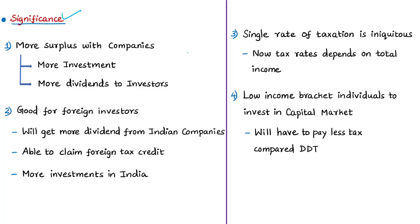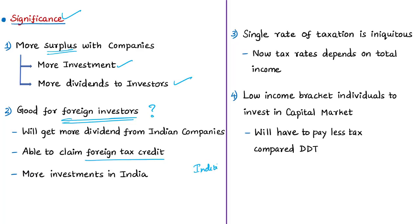Since companies are now freed from paying DDT, they will have more surplus to reinvest in the business, and shareholders may receive more dividends. This move is also beneficial for foreign companies investing in Indian companies. Previously, when an Indian company paid huge DDT, the dividend received by the foreign company was reduced. The foreign company could not claim foreign tax credit in its home jurisdiction because DDT was taxed on the Indian company directly — creating a situation of double taxation.